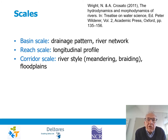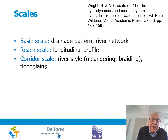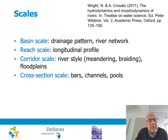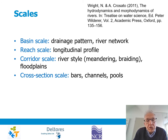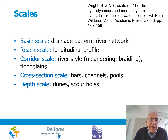Zooming in further, we see the corridor scale, where we study the style of a river — whether it is meandering or braiding — and it also deals with interactions with floodplains. Zooming in further, we arrive at the cross-section scale, where the relevant features are bars, channels, and pools. Zooming in even further, we arrive at the depth scale, where we deal with dunes and scour holes.